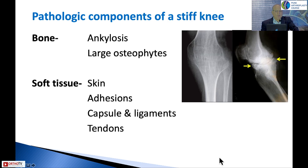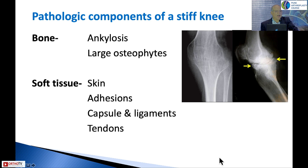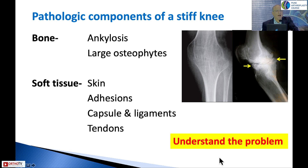What are the pathological components of a stiff knee? You have the bone, which can be ankylosed or have large bone blocks, and then you have the soft tissues, which can start from the level of the skin — adhesions which could be intra-articular or extra-articular — the capsule, ligaments, and tendons. It's important to understand what the components are during surgery so they can be addressed.